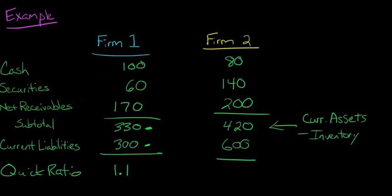And for firm 2, we do the same thing. We divide this 420 by 600, and it yields a quick ratio of 0.7. So how can we interpret this? Well, the 1.1 for firm 1, that quick ratio is higher than the 0.7 for firm 2. So that implies that firm 1 is more liquid.